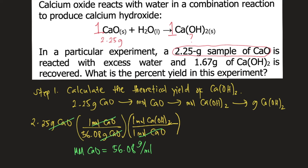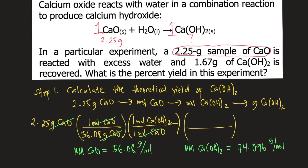Finally, in order to convert moles of calcium hydroxide into grams of calcium hydroxide, we need the molar mass of calcium hydroxide, which is 74.096 grams per mole. So at the bottom we put 1 mole of calcium hydroxide, and on top we put 74.096 grams of calcium hydroxide. The moles of calcium hydroxide cancel, and our final unit is grams of calcium hydroxide.